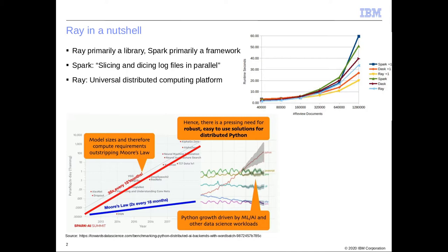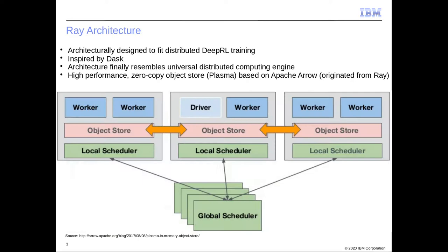On the bottom left we see that the resource consumption of the latest deep learning breakthroughs always superseded Moore's law, so there is a real need for distributed computing platforms. In the middle you see that Python is becoming the de facto standard for programming languages in ML and AI — this made the case for Ray.